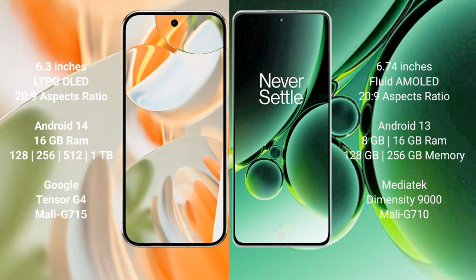Google Pixel 9 Pro comes with 16GB RAM and 128GB, 256GB, 512GB, or 1TB internal storage, powered by the Google Tensor G4 processor and GPU Mali-G715. OnePlus Nord 3 comes with 8GB or 16GB RAM and 128GB to 256GB internal storage, powered by the MediaTek Dimensity 9000 processor and GPU Mali-G710.